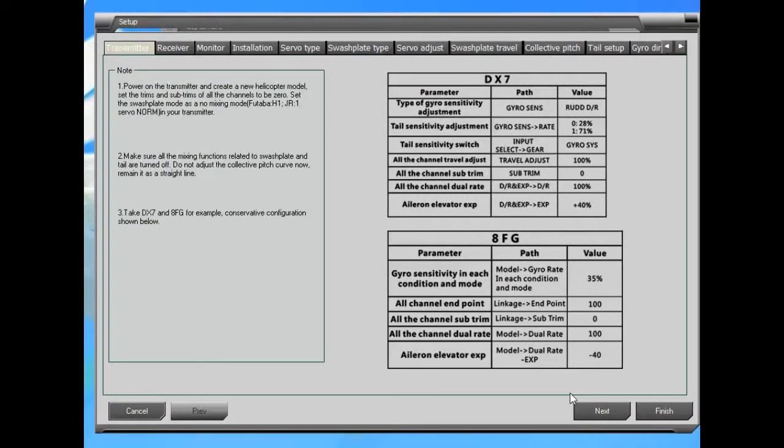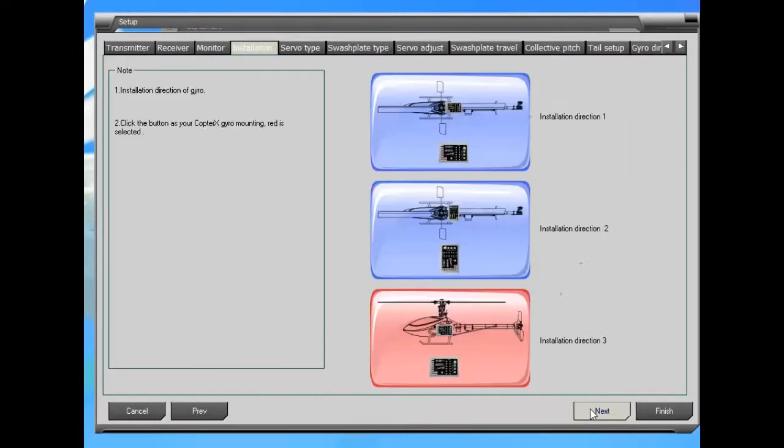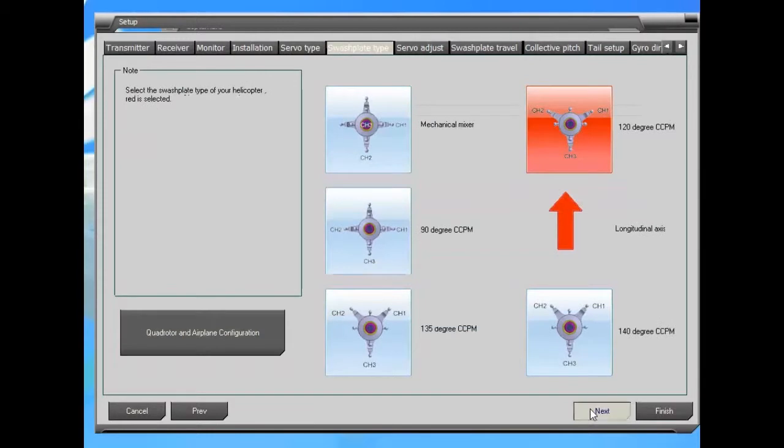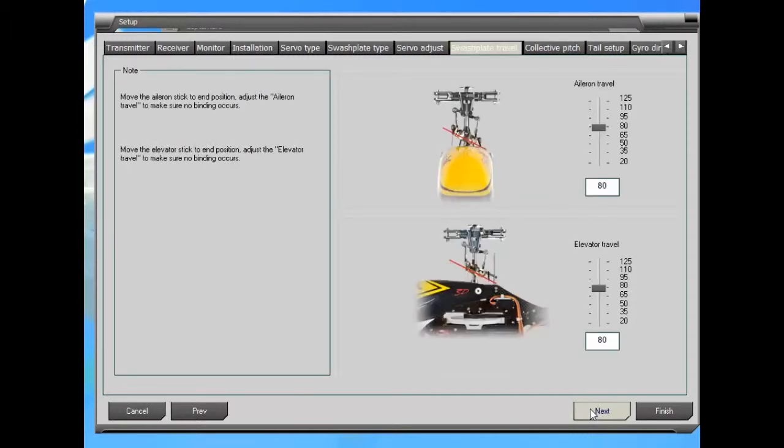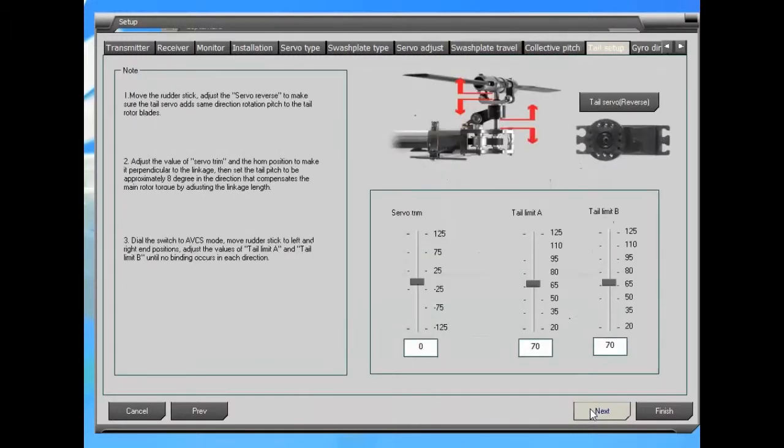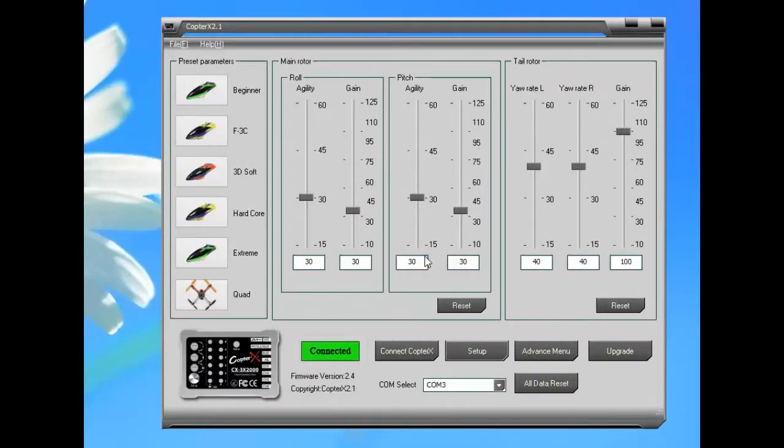Okay, what I'm doing now is going to the tail setup to reverse the rudder direction, because we just determined that it's going in the wrong direction. So I just did that and that's it. That's all there is to it.